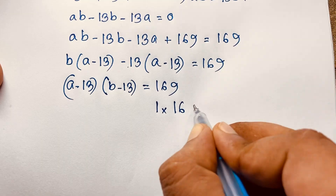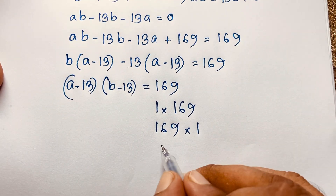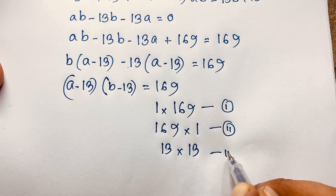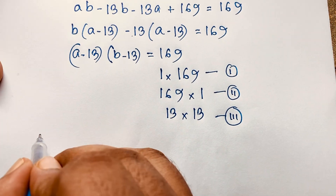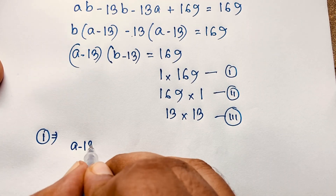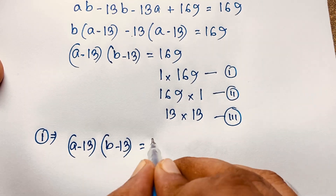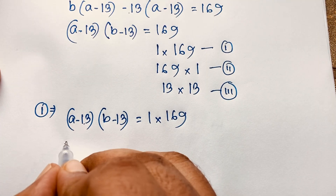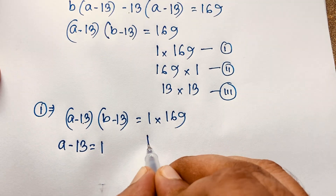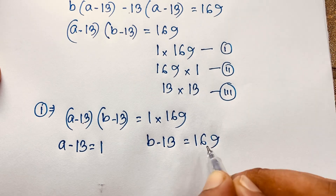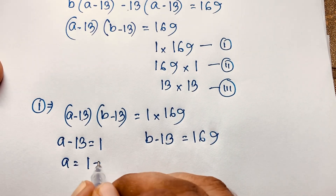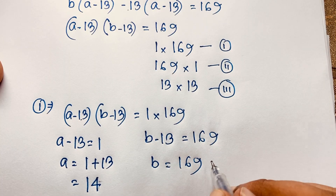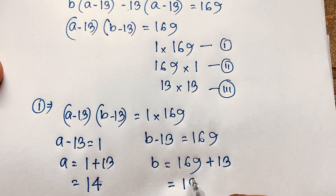The factors of 169 are: 1 times 169, or 13 times 13. This gives us three cases. For Case 1: (a minus 13)(b minus 13) = 1 times 169, so a minus 13 equals 1 and b minus 13 equals 169. Therefore a equals 14 and b equals 169 plus 13, which is 182.